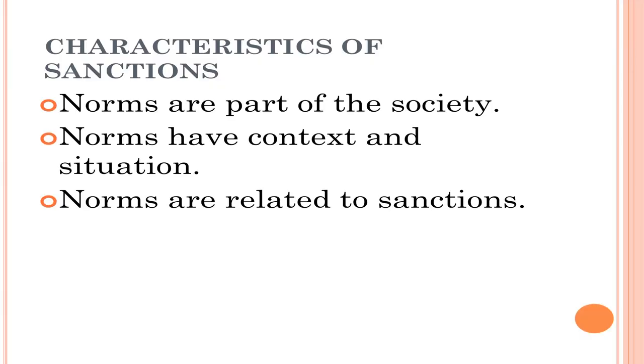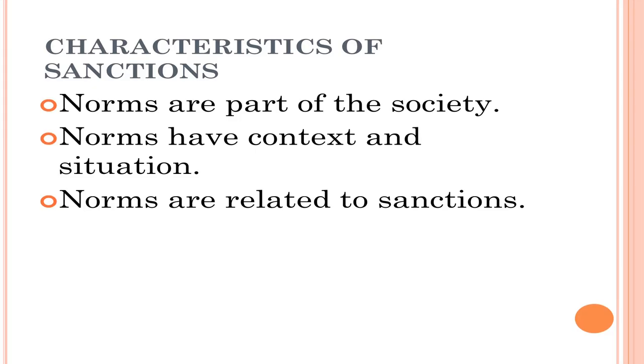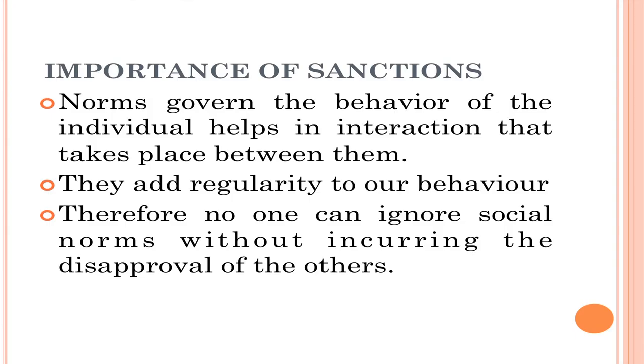Norms always have a context — as said, norms may vary across societies, but the guidelines on how to behave may vary. These are always contextual in nature. The third very important characteristic of norms is that norms are always backed by sanctions in each and every society, whether Indian society or Western society — there will always be a sanction behind the norms. These are the three fundamental characteristics of any kind of norm.